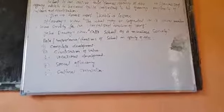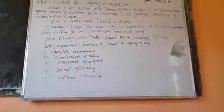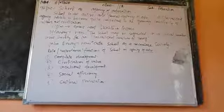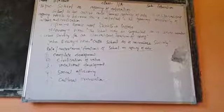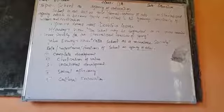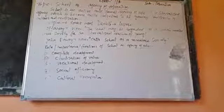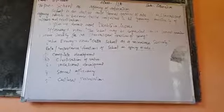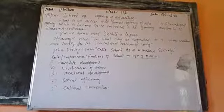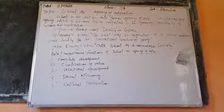As you remember, school is a formal agency of education and an active agency of education. The school is a formal agency of education because the school exists only for the purpose of providing education to the students. It is deliberately established by the society for the purpose of providing education, and at the same time it is an active agency of education.